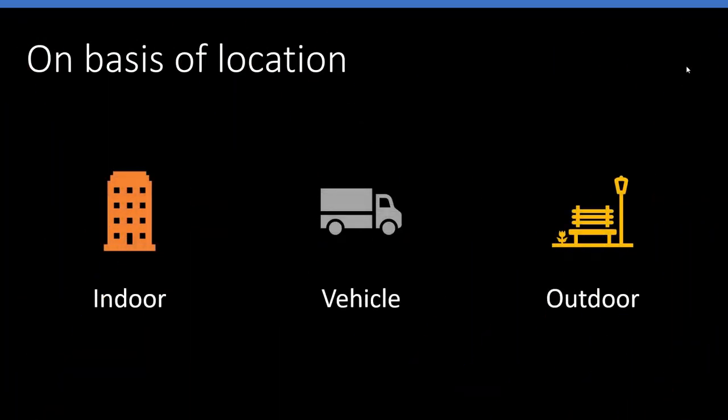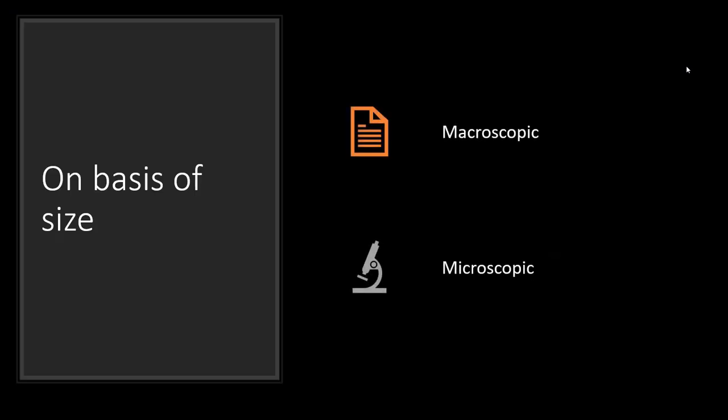On the basis of location — as simple as it may seem — crime scenes are classified as indoor, vehicle, and outdoor. Continuing with the previous example: the flat was the indoor crime scene, the vehicle used to transport the body is the vehicular crime scene, and the water body where the body was dumped is considered the outdoor crime scene.